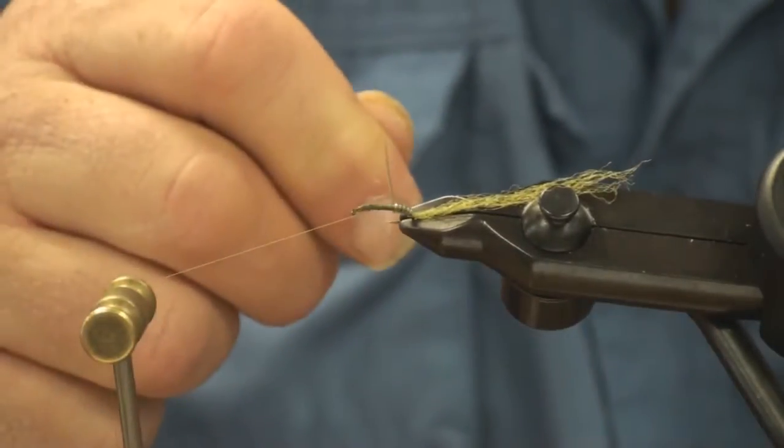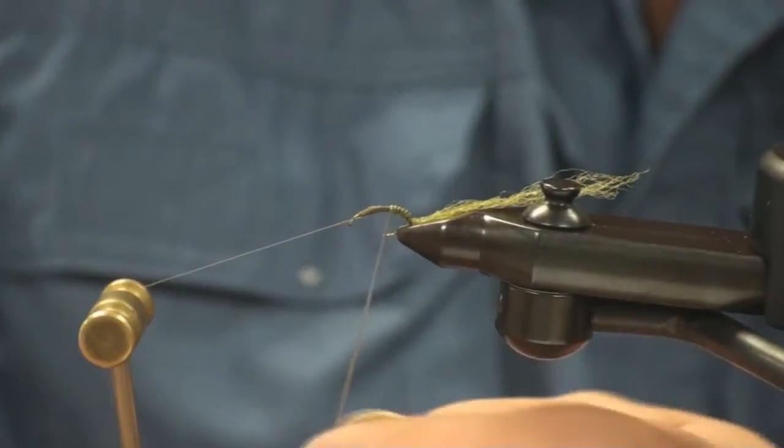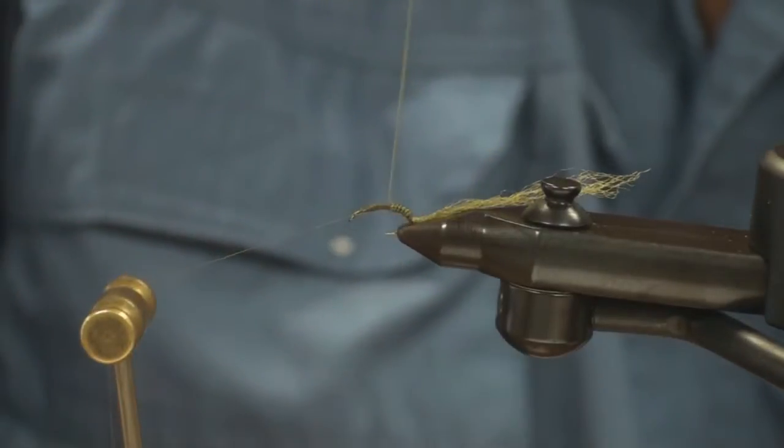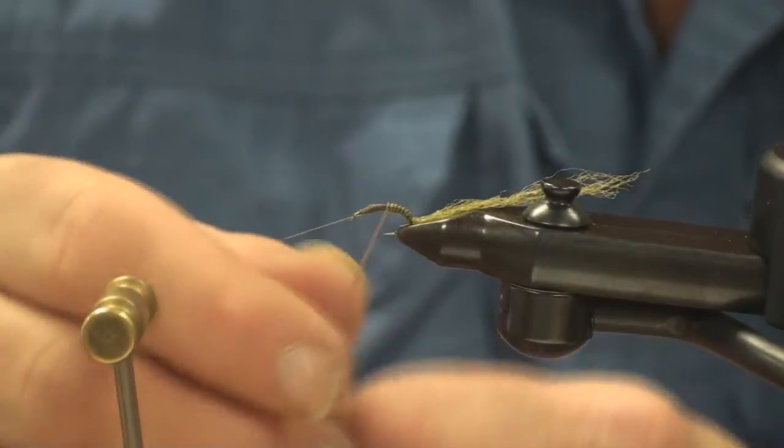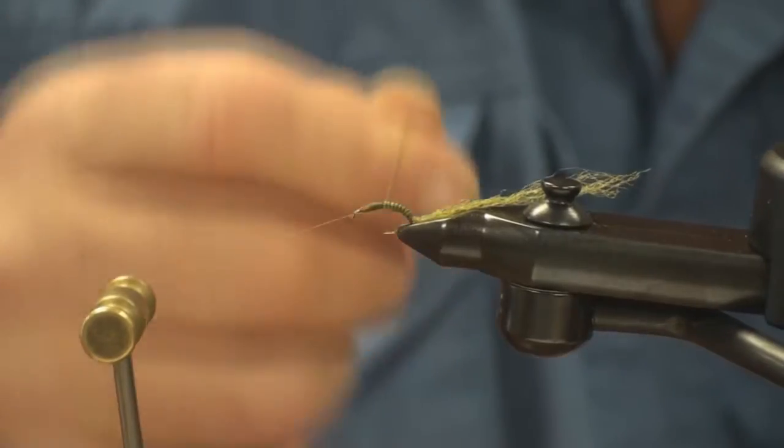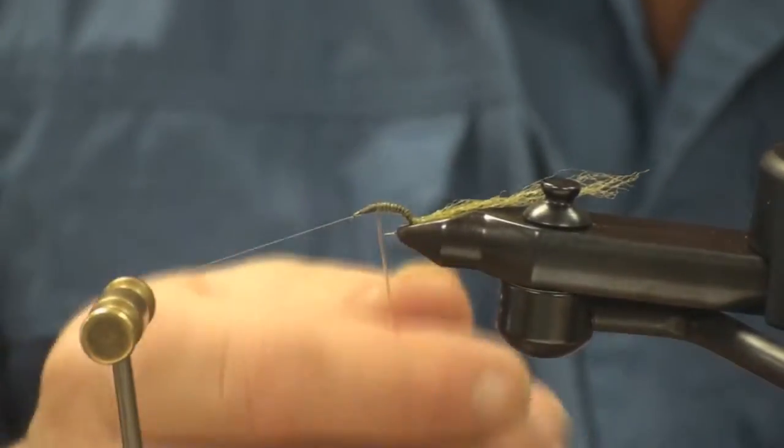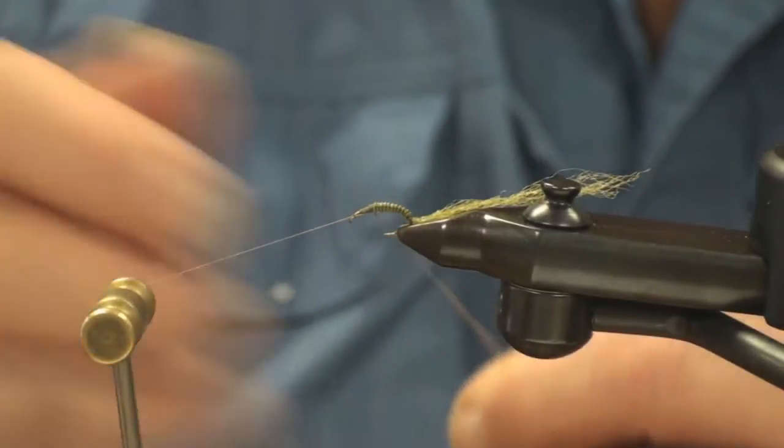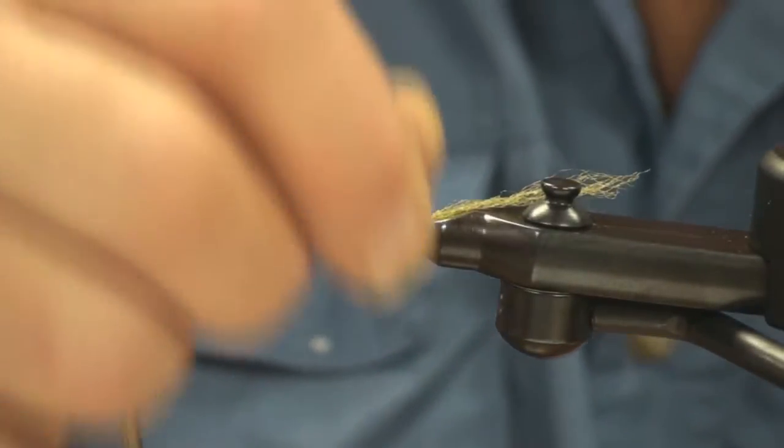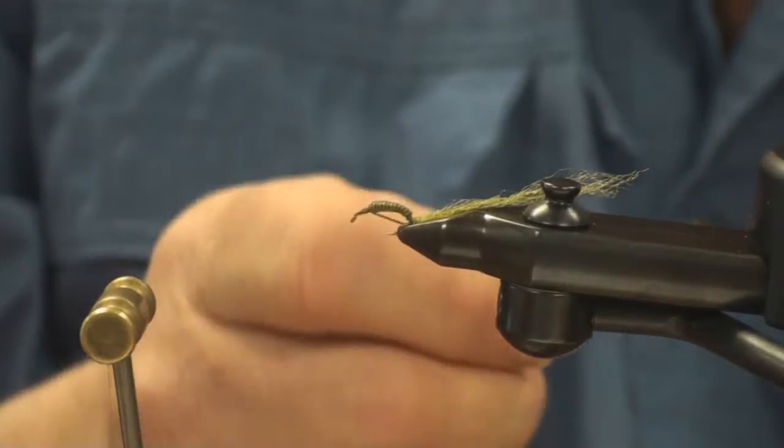As you proceed to wrap the wire tubing combination forward, relax a little bit and it won't constrict and it'll start to become a little wider, which will give you a taper of your body. Right to where you folded that Antron off, tie that off right there underneath.